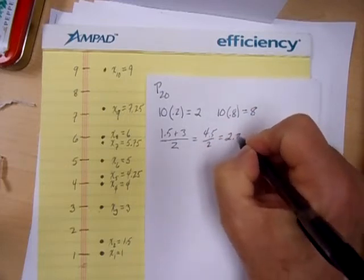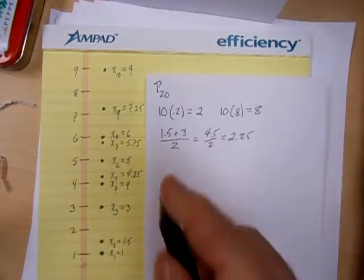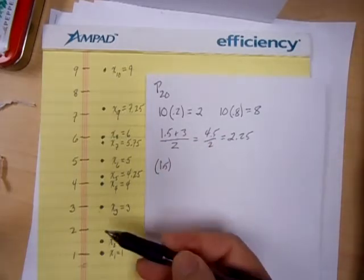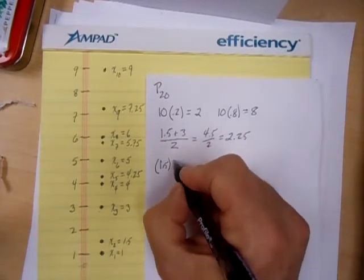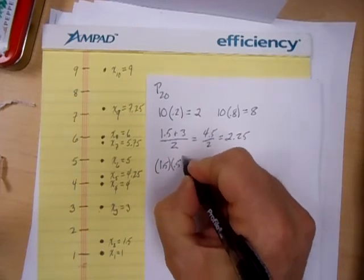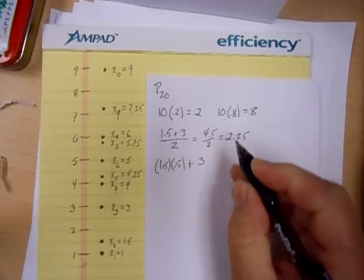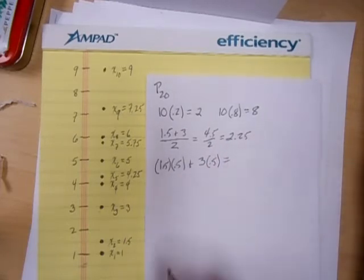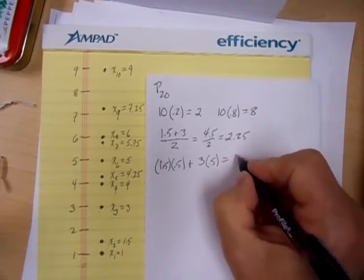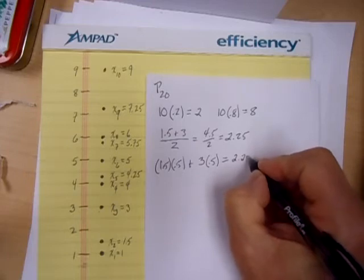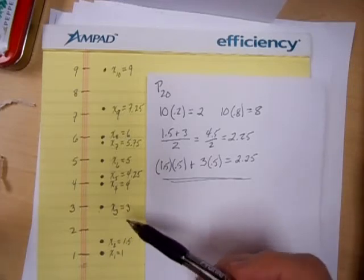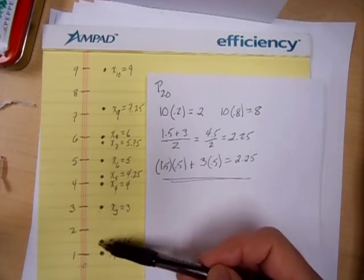I want you to notice that that's equivalent to doing this: taking that 1.5, I want 1.5 to contribute half of the value, and I want 3 to contribute the other half of the value. Run that off in your calculator and you'll notice that it also gets you 2.25. Okay, now that's not the only way that the percentile is calculated. Notice by the definition it could have been any one of the numbers in between here.